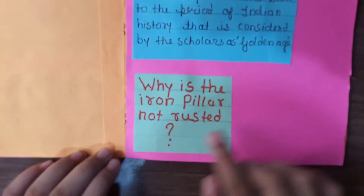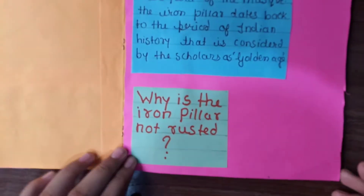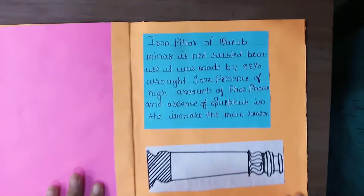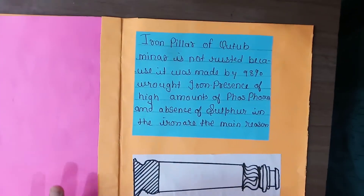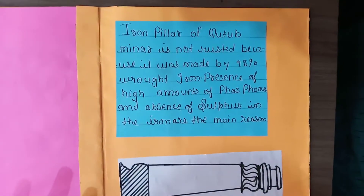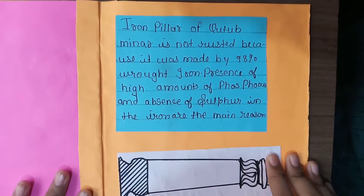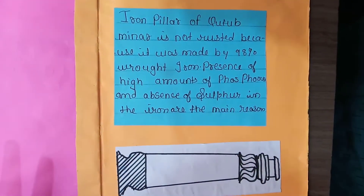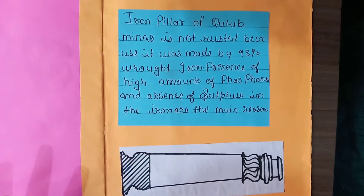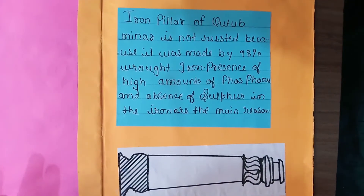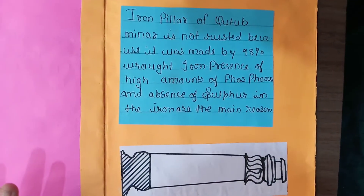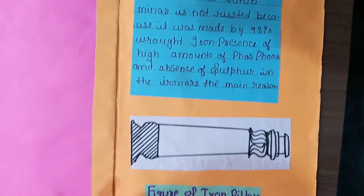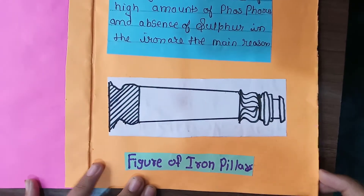Why is the iron pillar not rusted? The iron pillar of Qutub Minar is not rusted because it was made of 98% wrought iron. The presence of a high amount of phosphorus and the absence of sulfur in the iron are the main reasons. Here is the figure of the iron pillar.